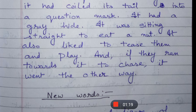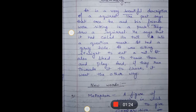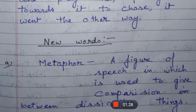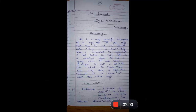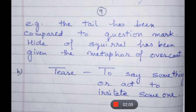In this poem, some new words would have come to you. The first is Metaphor. It is a figure of speech in which one thing is compared to another — used to give comparison between dissimilar things. For example, in this poem, the tail of the squirrel has been compared to a question mark, and the coat is compared to an overcoat — the coat has been given the metaphor of overcoat.